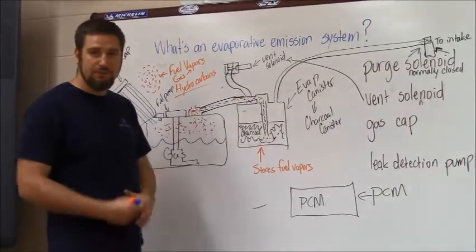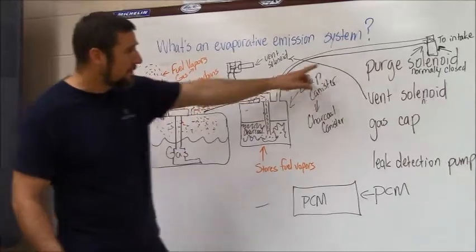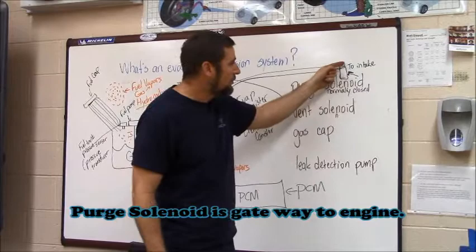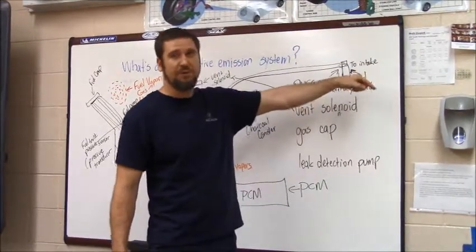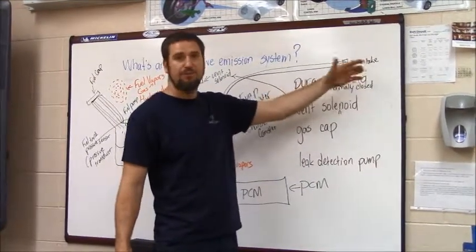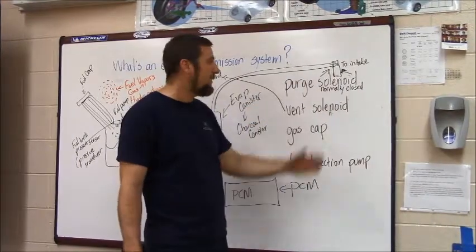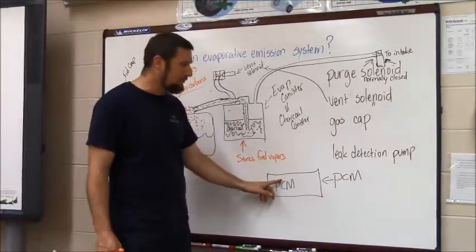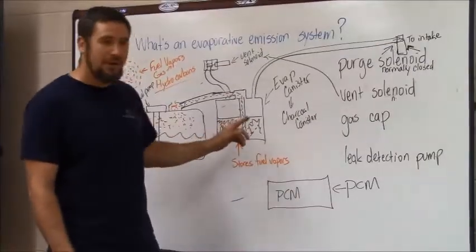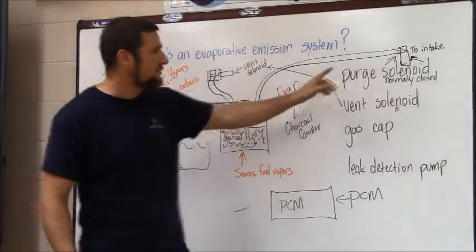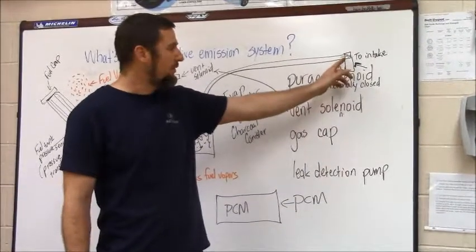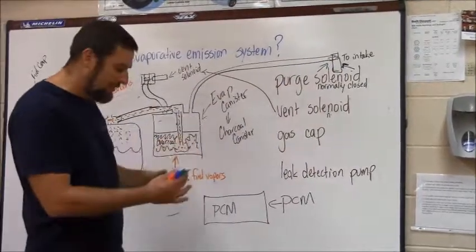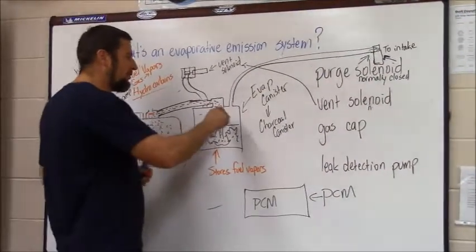The purge solenoid is a gateway to the engine — this line continues to the intake manifold. When the car is running there's manifold vacuum, which is a sucking force. When the car's computer decides it's time to evacuate the fuel vapors from the charcoal canister, it opens the normally closed purge solenoid so engine vacuum is able to draw the vapors from the charcoal canister into the engine and burn them so they're not wasted.